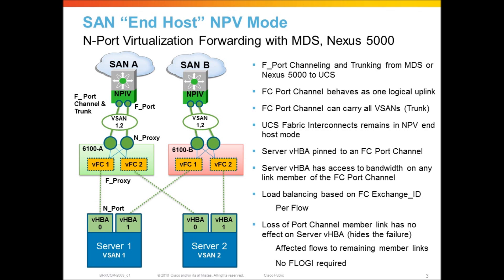In the previous slide, we talked about multi-vendor interoperation and having an individual uplink belong in one vSAN only. Now we'll talk about what you can do if you attach Cisco UCS to a Cisco upstream fiber channel network, like an MDS or a Nexus 5000. There are a couple of different things that enhance this solution, and one of them is called F-port channeling and trunking. In this example, we still have the fabric interconnect in end host mode, but now we're attaching to an MDS or a Nexus 5000 upstream.